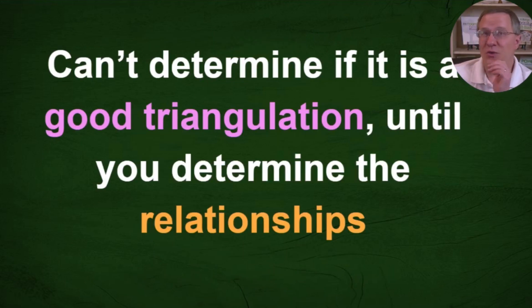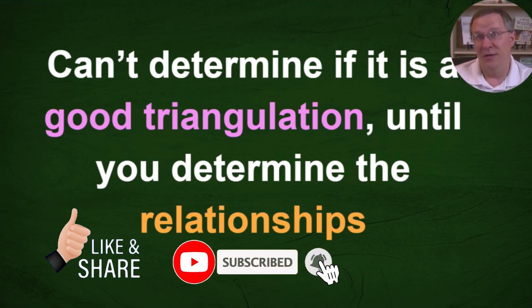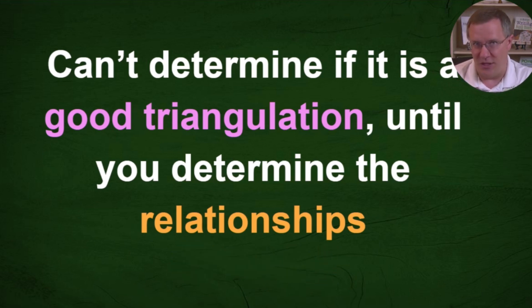So in summary you can't really determine if it is good triangulation until you determine the relationships that those people have between one another. You can have good triangulation, bad triangulation, and then you can have not triangulation. Like I said with not triangulation when you have one of your three matches that is actually a descendant of another one that is not a triangulation because we can just ignore that person that is a descendant. All of their DNA that is matching in this case would have come from their ancestor that's part of the triangulation match.